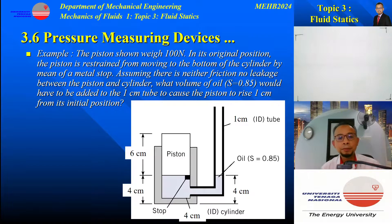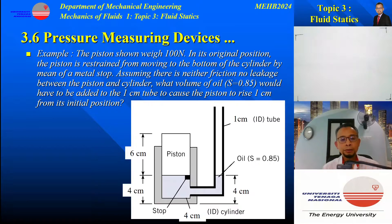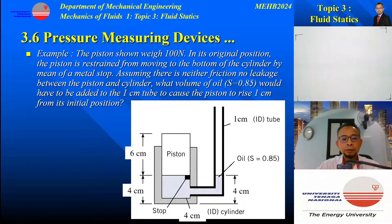Now let's look at the next example. We have a piston which weighs 100 N enclosed in a hollow cylinder. The system is connected with a tube of diameter 1 cm. Initially the piston is resting on the stopper and the fluid level is as shown. We will pour liquid into the tube, and the fluid level will rise until the pressure at the bottom is just enough to balance the weight of the piston pushing downward.